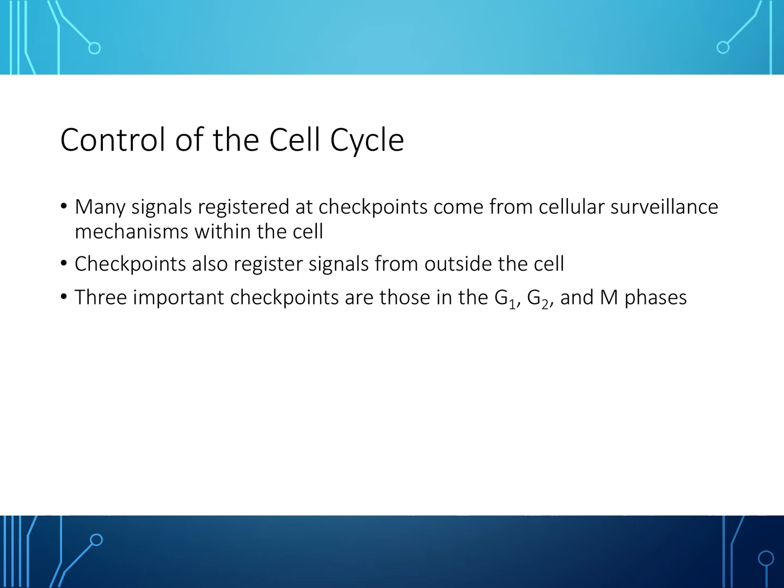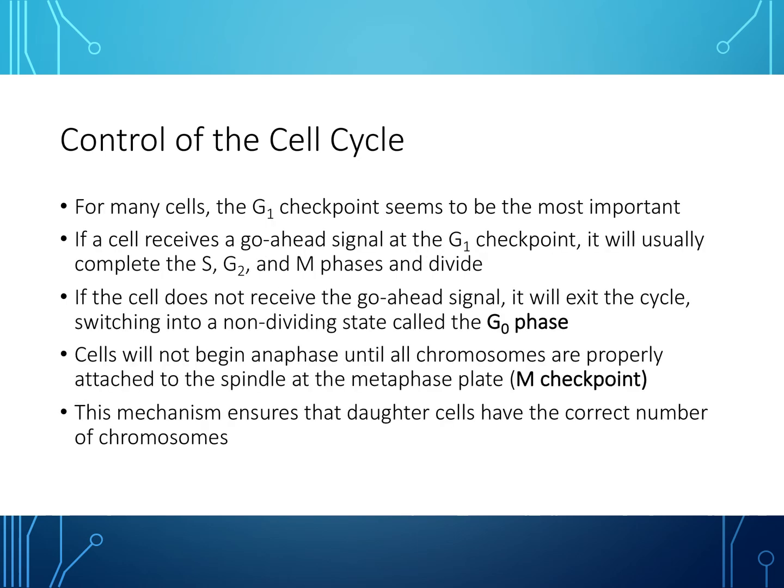There are three important checkpoints you must know: the G1, the G2, and the M phases. For many cells, the G1 checkpoint is the most important. If a cell receives a go-ahead signal at the G1 checkpoint, it will usually complete the S, G2, and M phases and divide. If the cell does not receive the go-ahead signal, it will exit the cycle, switching into a non-dividing state called the G0 phase. Cells will not begin anaphase until all chromosomes are properly attached to the spindle and the metaphase plate — this is the M checkpoint — which ensures that daughter cells have the correct number of chromosomes.